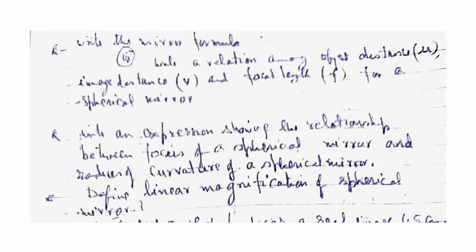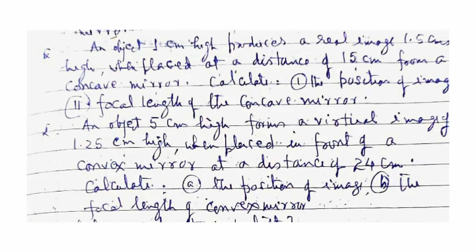Define the linear magnification of a spherical mirror. An object 1 cm high produces a real image 1.5 cm high, placed at a distance of 15 cm from a concave mirror — calculate the position of the image and the focal length. A convex mirror forms a virtual image of 1.25 cm high of an object 5 cm high placed 24 cm in front of it — calculate the position of the image and the focal length of the convex mirror.